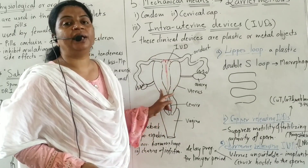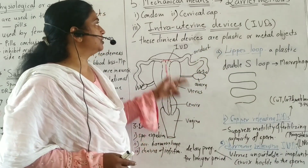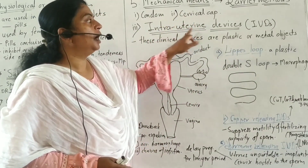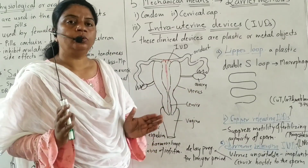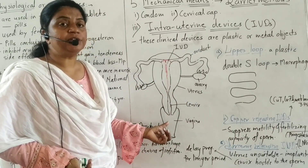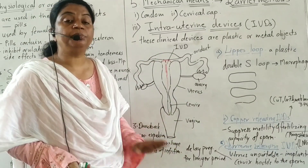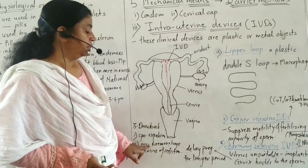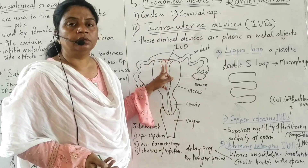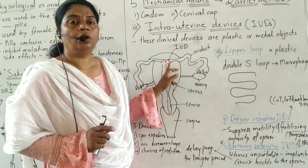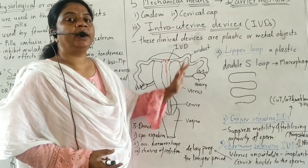This results in no implantation and no pregnancy. These are the mechanical means or physical barriers: condom, cervical cap, and IUDs. However, IUDs have drawbacks — spontaneous expulsion, occasional hemorrhoids, infection to the uterus, friction, and possible bleeding. These are the drawbacks of IUDs.